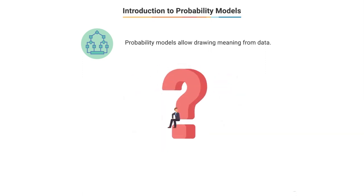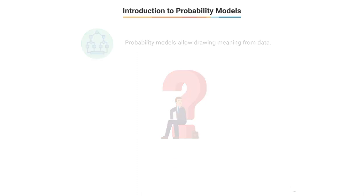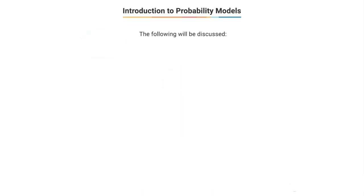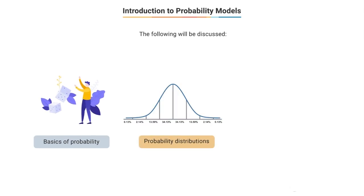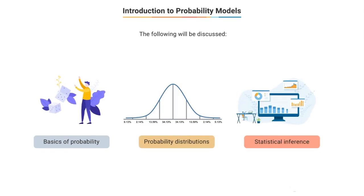Or the exit polls for this election show us with 95% confidence that party X will win 53 plus/minus 3 seats in the Senate. How do we get to these conclusions? In this video, we will discuss the theoretical underpinnings regarding basics of probability, probability distributions, and statistical inference.